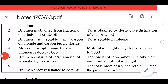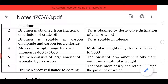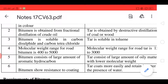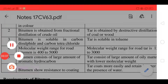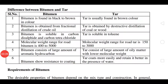Bitumen is soluble in carbon disulfide and carbon tetrachloride, whereas tar is soluble in toluene. Next is molecular weight range: for road bitumen it is 400 to 5000, whereas the molecular weight of road tar is 150 to 3000.